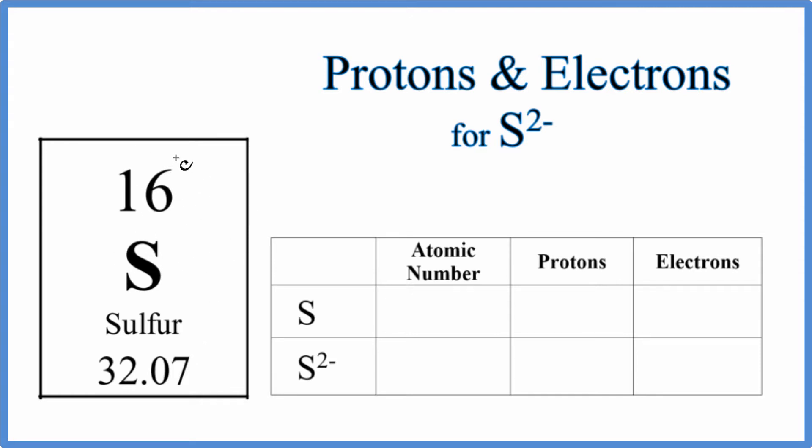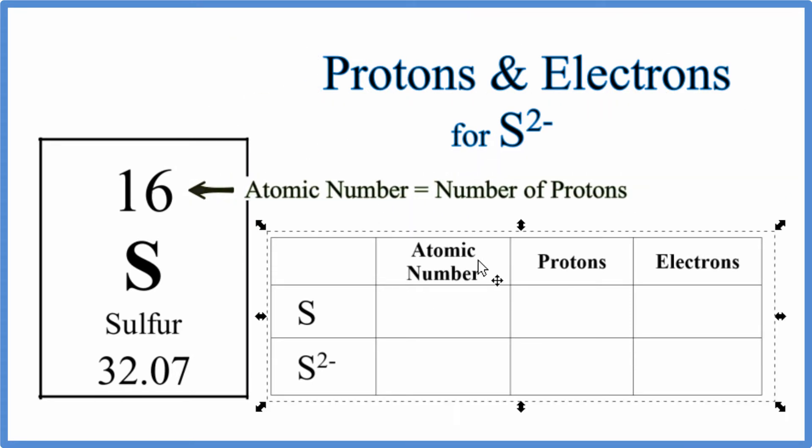We can see that 16 is the atomic number, and the atomic number equals the number of protons. So sulfur has an atomic number of 16 and 16 protons.